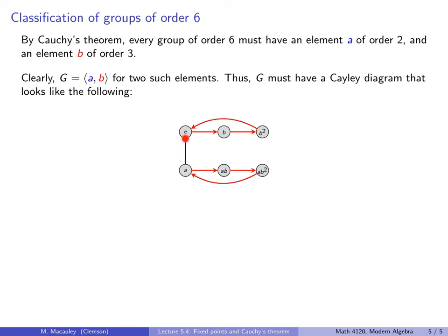It's got the identity, it's got b, it's got b², then we come back to the identity. It's got a, which has order 2, this is a double arrow. And then, well, from a we can apply b, we get ab, and we can apply b again to get ab². And then if we apply b again, we get back to a, because b³ is the identity.